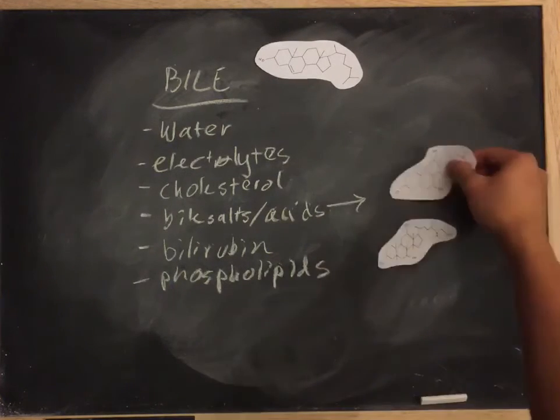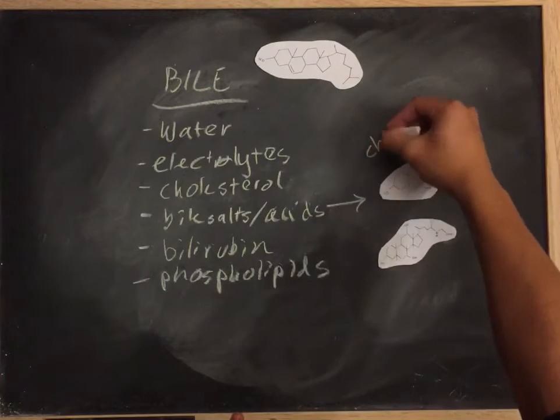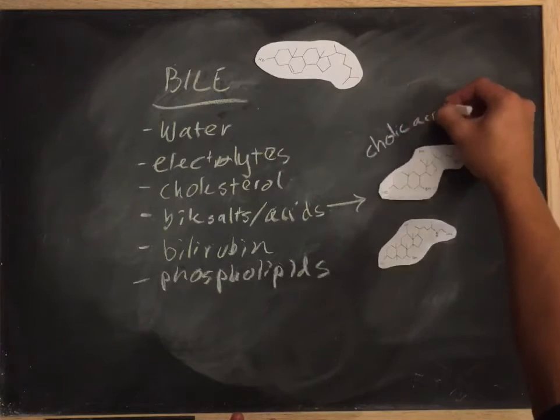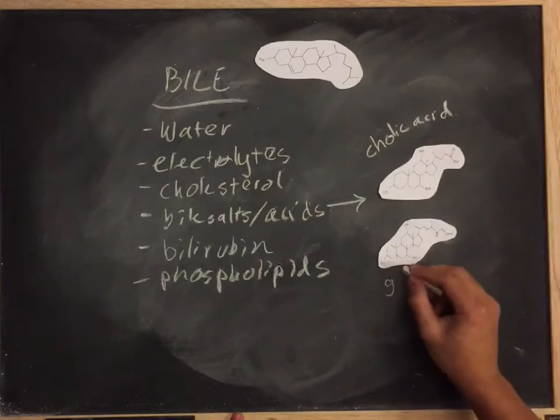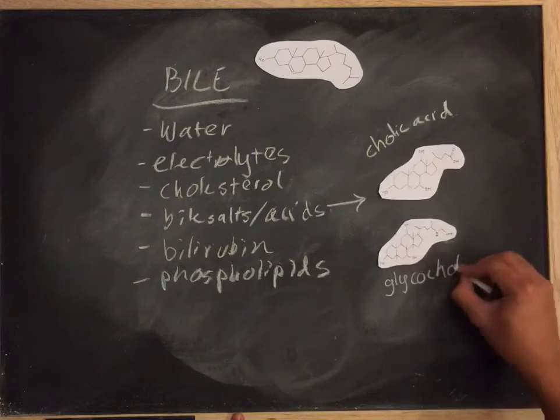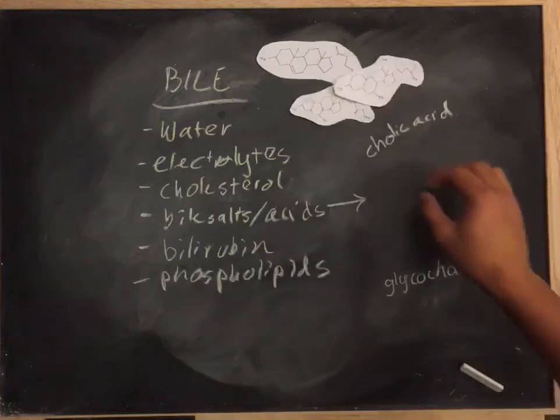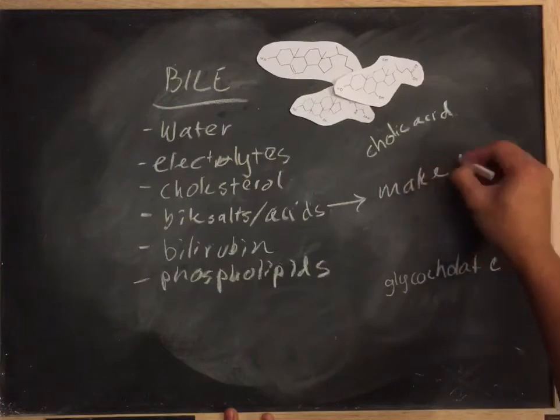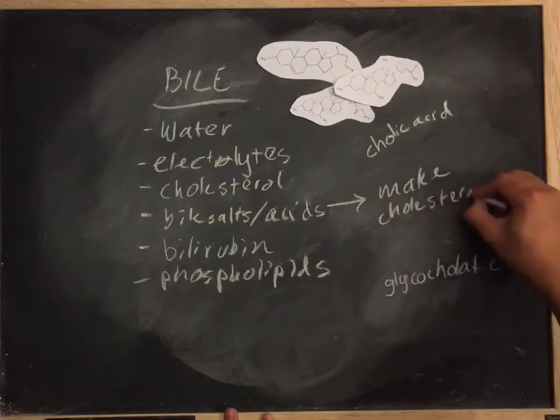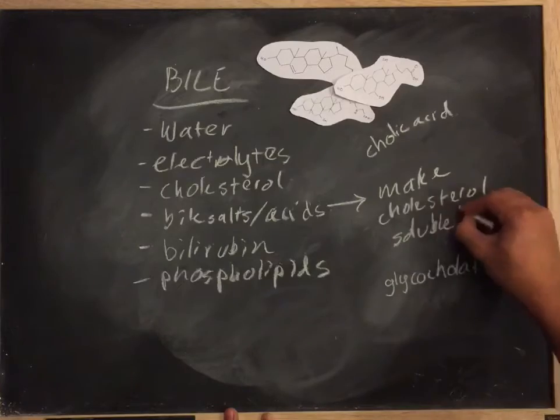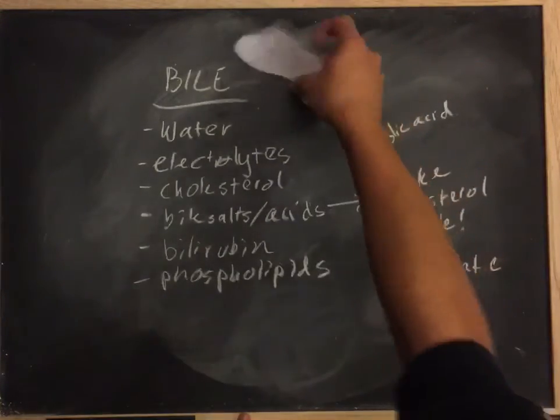This is where bile salts and bile acids come in. Here we have colic acid, which is an example of a bile acid that can be found in bile, and glycocolate, which is a bile salt that can be found in bile. And these two help cholesterol become soluble in bile.